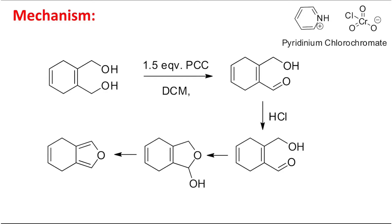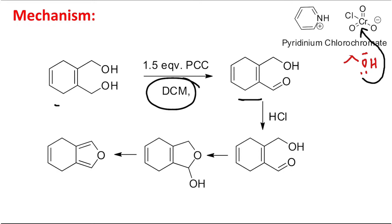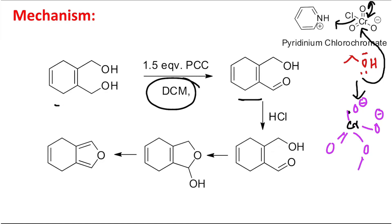What happens is: this alcohol gets oxidized using PCC in DCM to the corresponding aldehyde. I'm not going to explain the mechanism in full detail, but in brief: the lone pair of oxygen attacks the chromium center, and through an acyl nucleophilic substitution-type reaction, it ultimately produces a chromium ester. This is a C=O double bond with an O-R group and an O-Cr linkage.